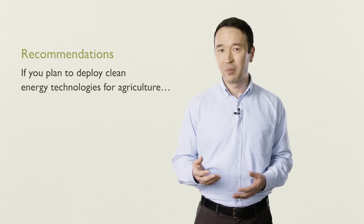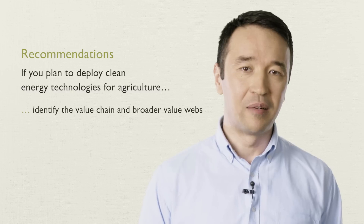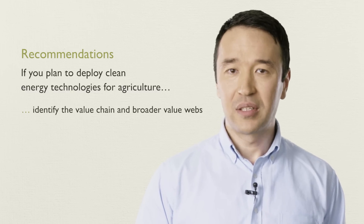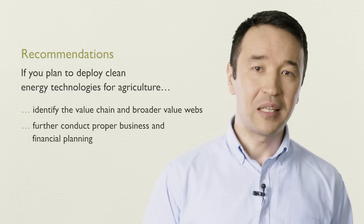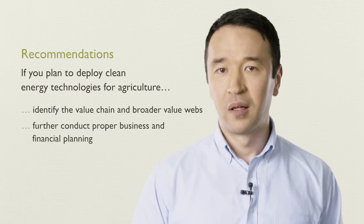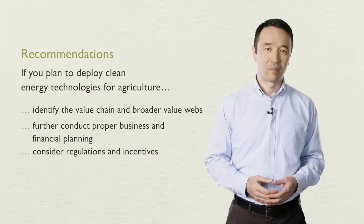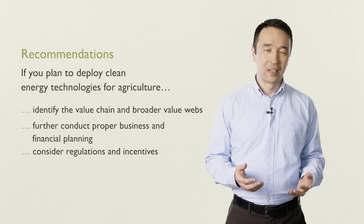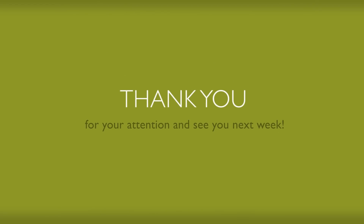Coming to the end of introduction to this week, I would like to summarize several points to consider if you are thinking about deploying clean energy solutions in the agricultural sector. A good starting point would be to identify the value chain and broader value web that you will be operating in. Business and financial planning based on ground research needs to be done to see if the business would be viable — where to get initial funding, how to finance operations, which technology, which inputs, what outputs. This also involves considering if regulations provide any incentives such as soft loans, subsidies and tax reductions, and crucially, whether these incentives are permanent, one-time, or have some expiry date. Thank you very much for watching. You can read in more detail about the issues highlighted in the reading material provided with the course. Thank you for your attention and see you next week!